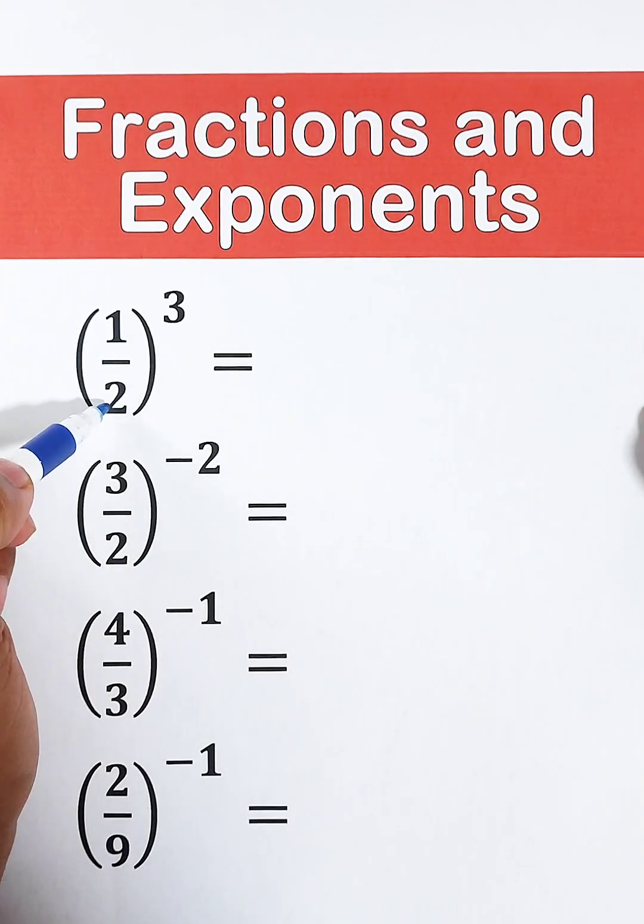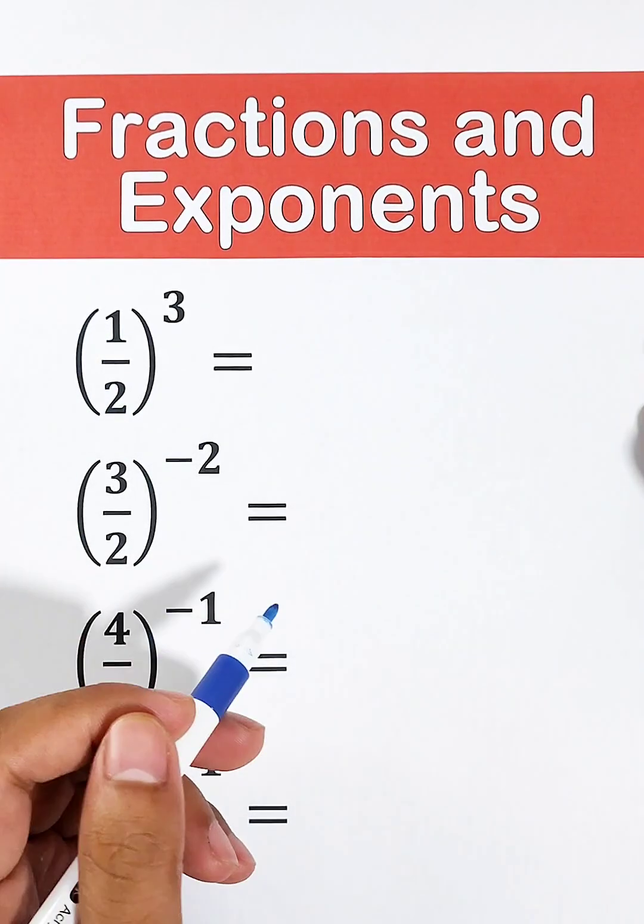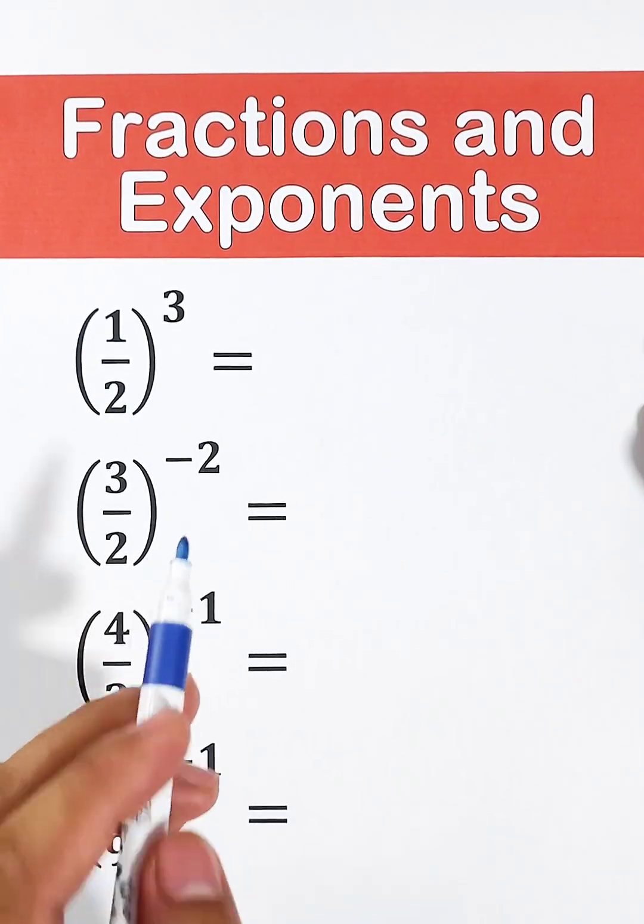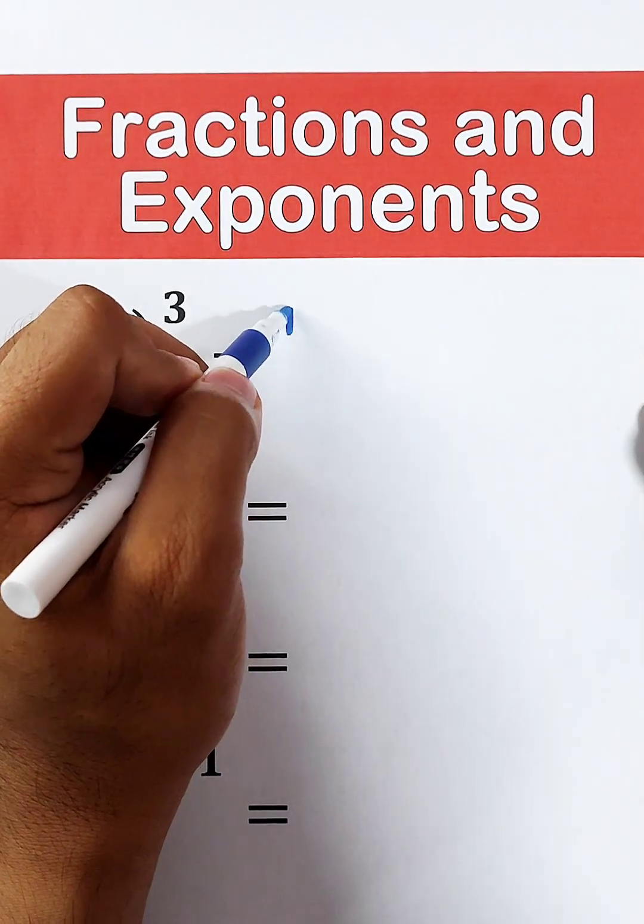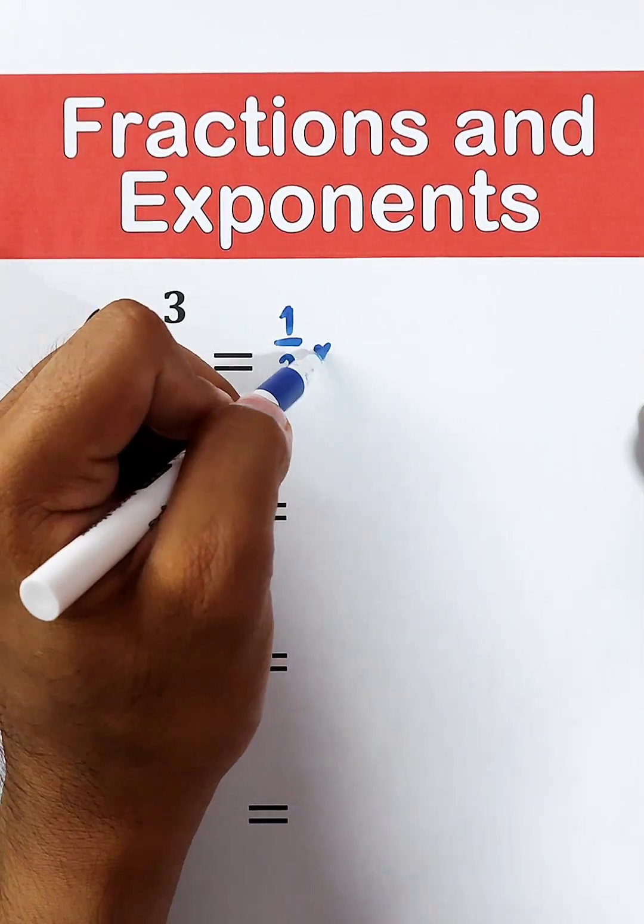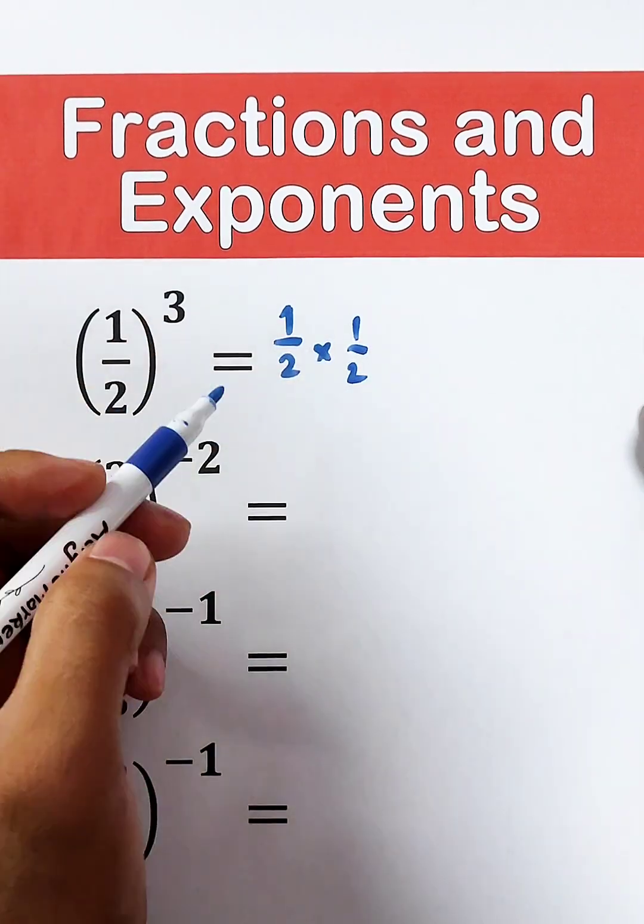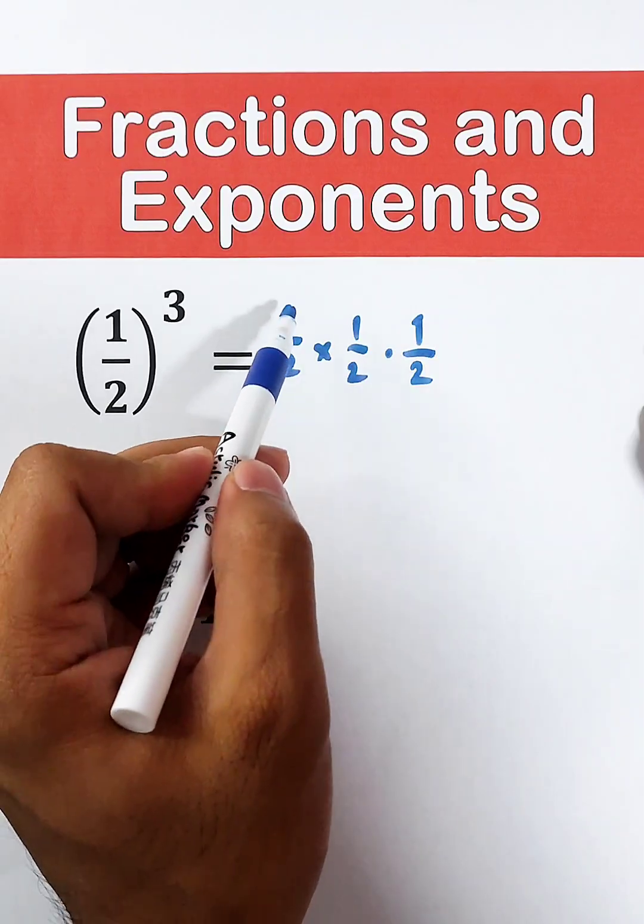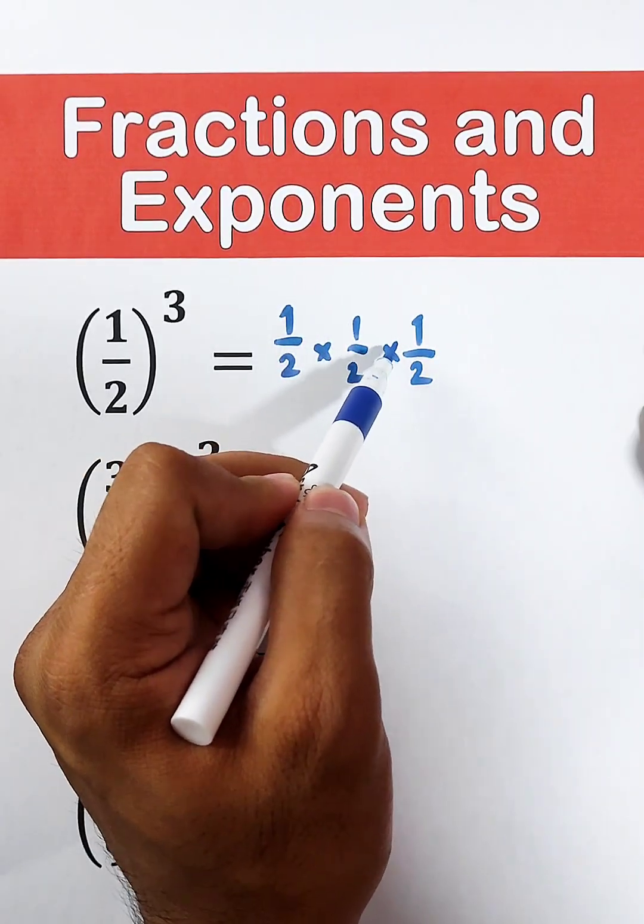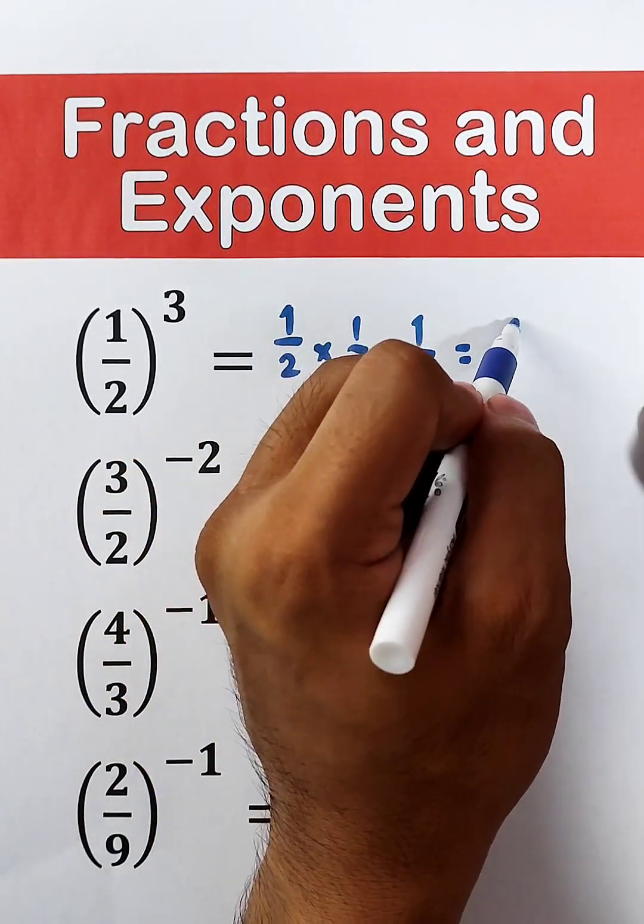Let's start with 1 over 2. 1 over 2 is the same as 1 half times 1 half times 1 half, and it goes like this: 1 half times 1 half times 1 half. Then multiply 1 times 1 times 1, that is equal to 1.